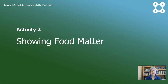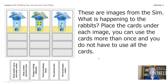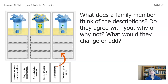Activity two: showing food matter. Let's show what happens to the food molecules in an animal's body. This sheet is provided for you to cut out and rearrange. If you don't have scissors at home, you can just write in the spaces provided. These are images from the sim — recognize these? What is happening to the rabbits? Place the cards under each image. You can use the cards more than once and you don't have to use all the cards. Pause the video so you can work on this. What does a family member think of the way you arranged these cards? Do they agree with you? Why or why not? What would they change or add?